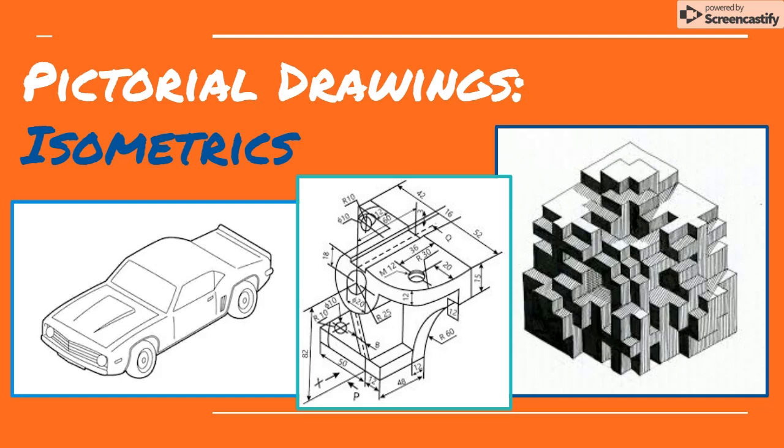In this lesson, we're going to have a look at a type of technical drawing called an isometric. Like other kinds of pictorial drawings, isometrics show us three sides of the object in one view, giving the drawing a 3D effect.